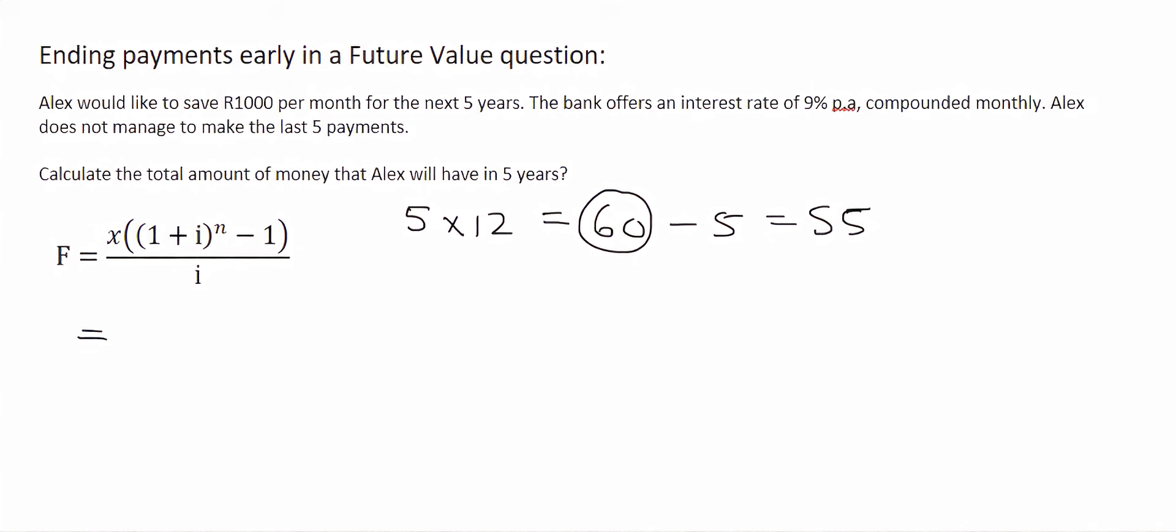So this person is only going to make 55 payments. We can fill everything in like that and then calculate it, and you should get a value of 67,768 Rand and 83 cents. That is how much money Alex has after making 55 payments. But the moment that those 55 payments were complete, the money is not going to be taken out of the bank because Alex only wants the money in five years time.